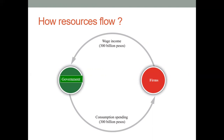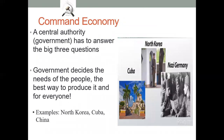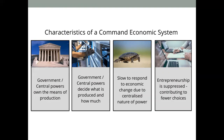Poor people increased, so there was a call to replace business control with government control. This introduced a new system called the command economy — a central authority where the government controls everything and decides all the people's needs and wants. Examples include North Korea, Cuba, and previously Nazi Germany. Characteristics include government control of everything and the power of production, but very slow changes in economic conditions. Entrepreneurship is suppressed, contributing to fewer choices.